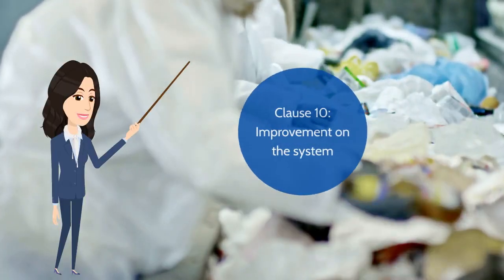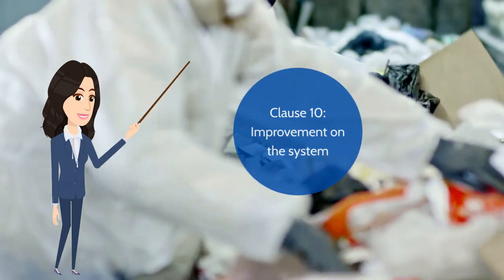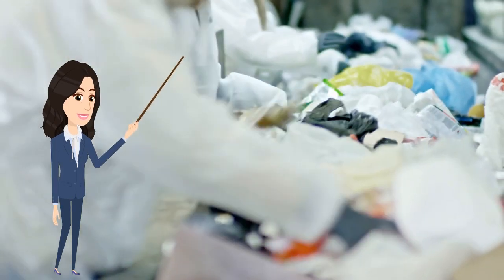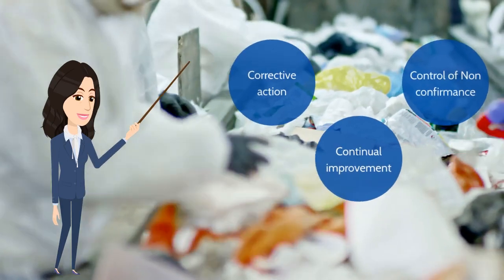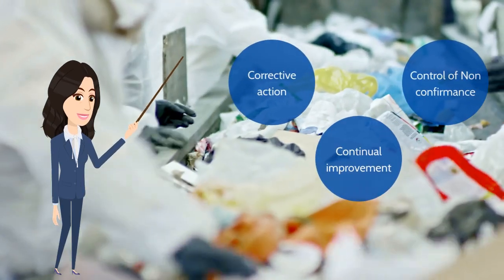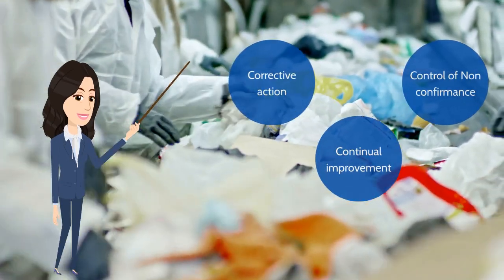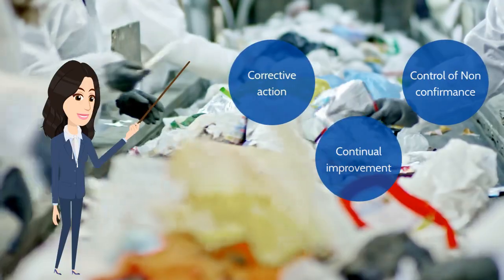Clause 10 is for the improvement on the system. The organization can take action such as corrective action, continual improvement, and control of non-conformances to improve the environmental management system.